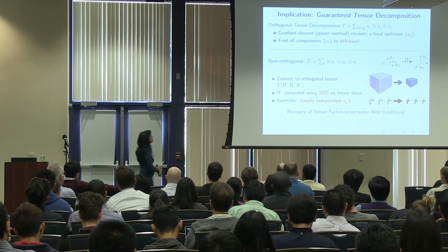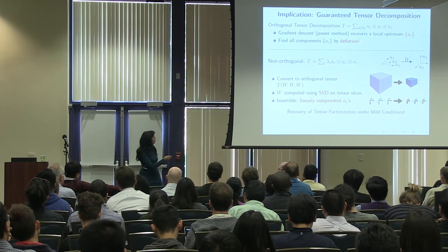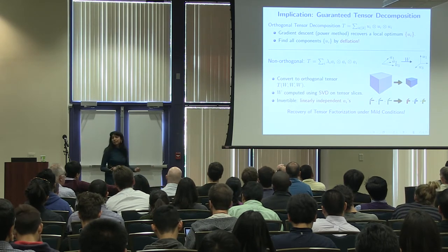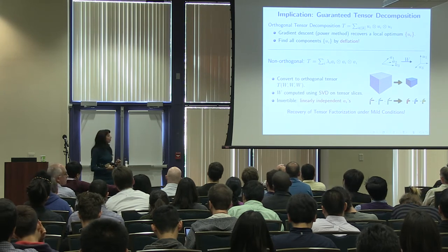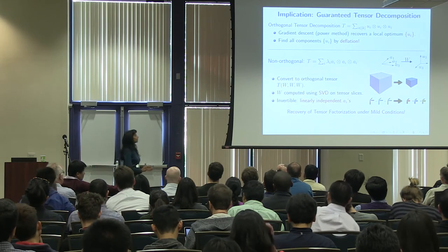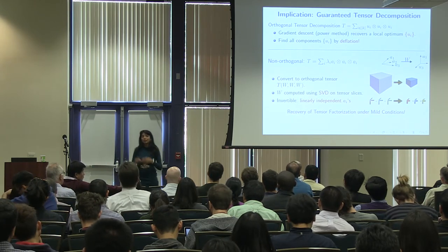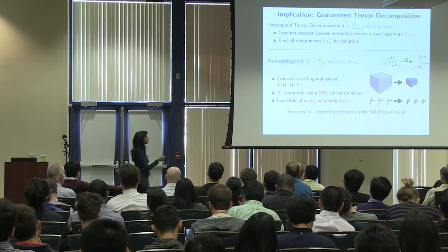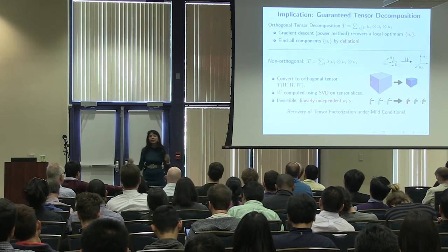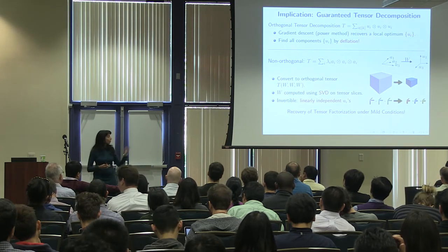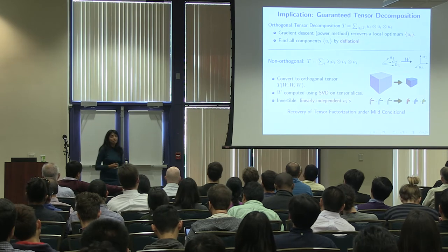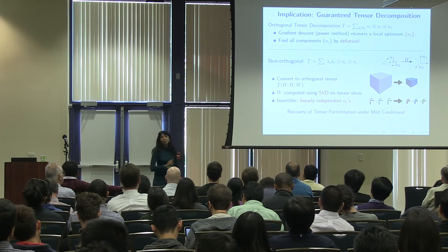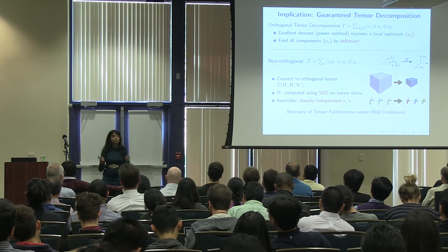Using simple efficient algorithms, we can prove that we can correctly find the decomposition. The first step was the power method for the orthogonal setting. For the more general case of non-orthogonal components, we recover them using additional steps that are again efficient to implement. Tensors are much more informative: with a matrix, you couldn't find a unique non-orthogonal representation, but we can do that with tensors.